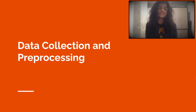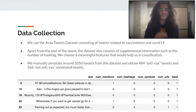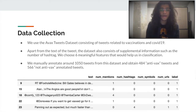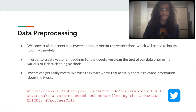We now talk about data collection and pre-processing. For our project, we use the AVAX tweets dataset which consists of a lot of tweets related to anti-vaccination and general COVID-19 misinformation, and we manually annotate about a thousand of them as zero or one — anti-vax or non-anti-vax.